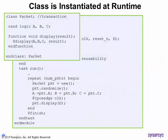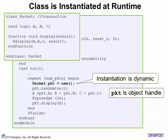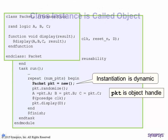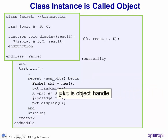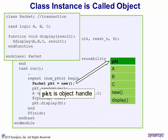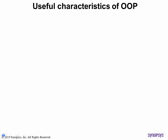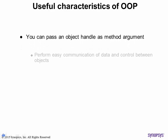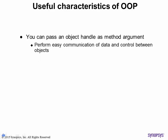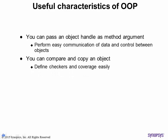Let us look at some details about classes and objects. A class is instantiated at runtime using the built-in function new. Note that this happens dynamically at runtime. The class instance is called an object. The new function constructs the object memory. You can now access the object's variables and functions using the object handle with dot notation. It is also very convenient to pass object handles as arguments to methods and to be able to copy and compare objects easily.